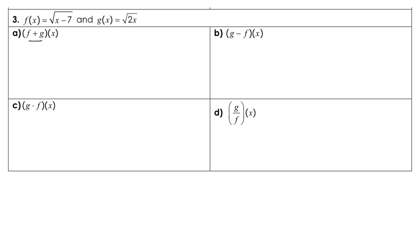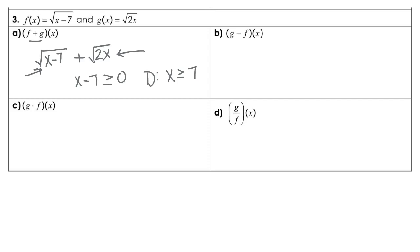Question 3, we have f plus g, so we have the square root of x minus 7 plus the square root of 2x. Those aren't like terms, so that's as far as you can take that addition. For the domain, you're going to pick on the smaller amount. x minus 7 is definitely smaller, so x minus 7 has to be greater than or equal to 0, which tells us x has to be greater than or equal to 7. For g of x minus f of x, we have the square root of 2x minus the square root of x minus 7, which you cannot reduce further — same domain, x greater than or equal to 7.